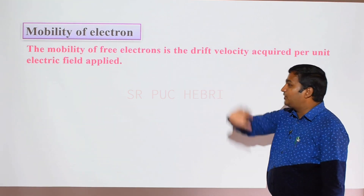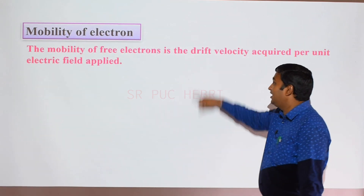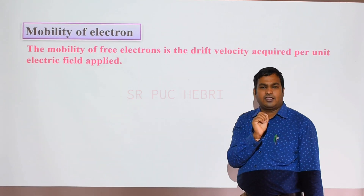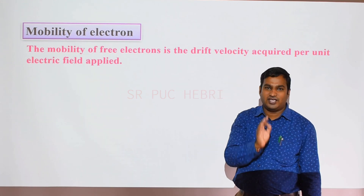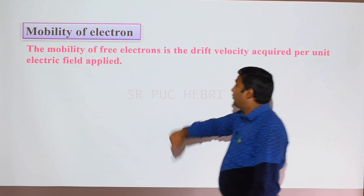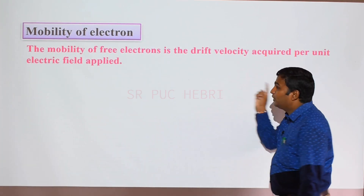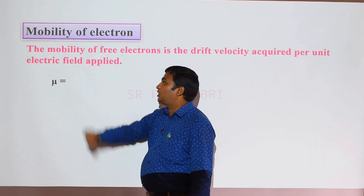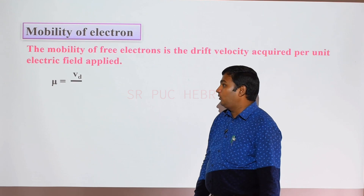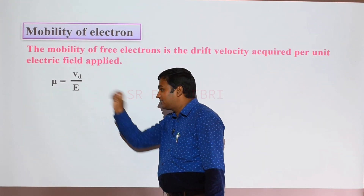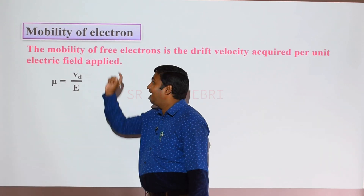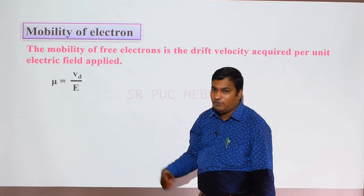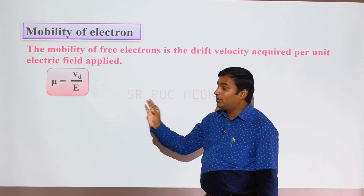Today we are discussing mobility of the electron. The mobility of a free electron is the drift velocity acquired per unit electric field applied — this is an important definition for exams, usually asked for one or two marks. Mobility is denoted by the letter mu. Mathematically, mu is equal to Vd divided by E, where Vd is drift velocity and E is the electric field.